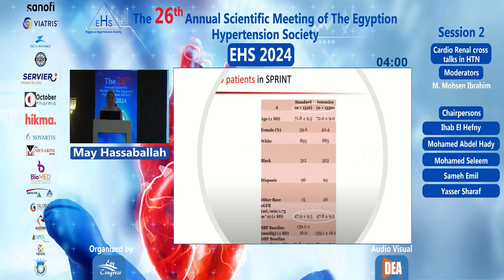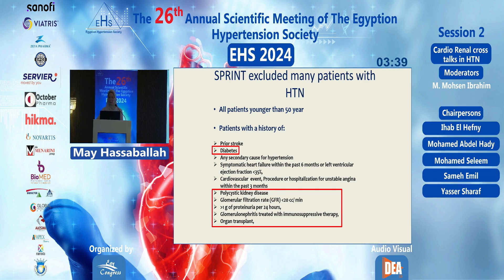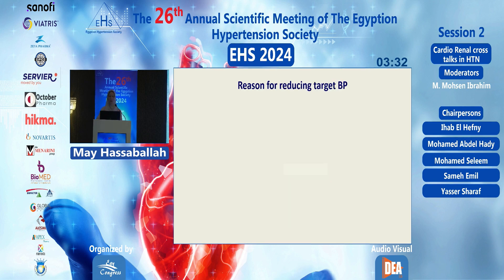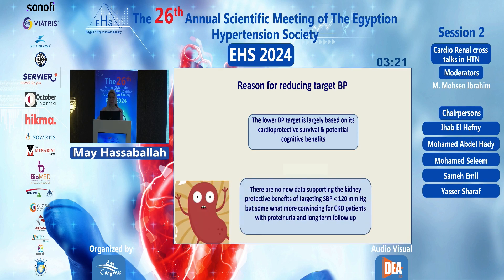Importantly, SPRINT is not a typical CKD study. The mean GFR was 47.9 in both groups, and it excluded diabetic patients, polycystic kidney disease patients, those with GFR less than 20, proteinuria more than 1 gram per 24 hours, patients on immunosuppressive therapy for glomerulonephritis, and organ transplant recipients. The rationale for the new target was mainly cardioprotective and cognitive, with no new data yet strongly supporting kidney-protective benefits of targeting systolic BP below 120 mmHg.